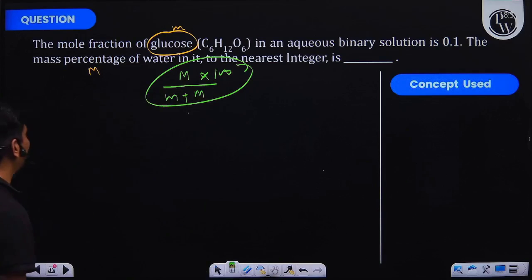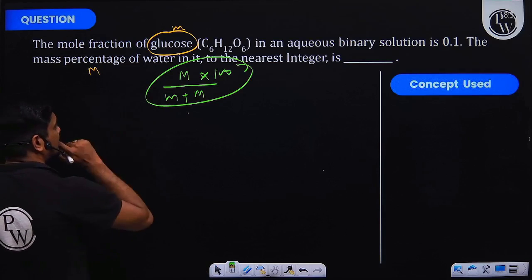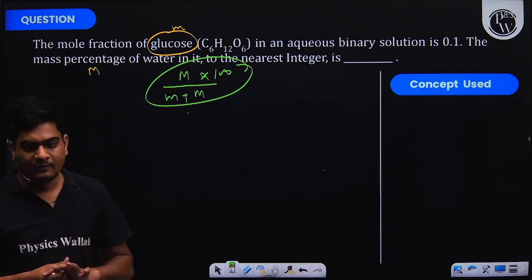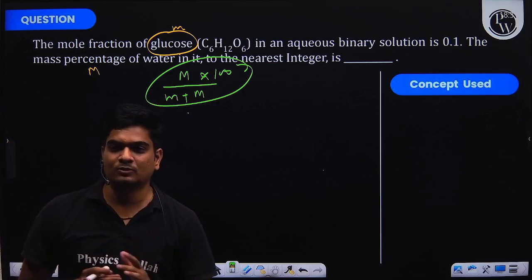We know that the mole fraction of glucose is 0.1. What we can do is suppose or say that the total moles in the solution is one.